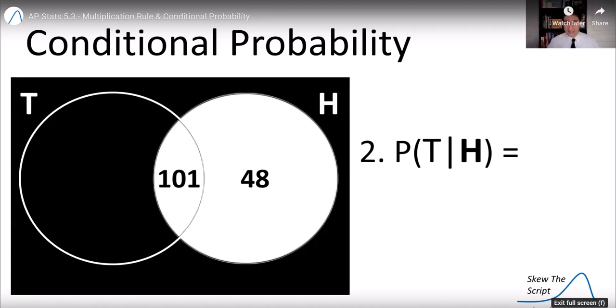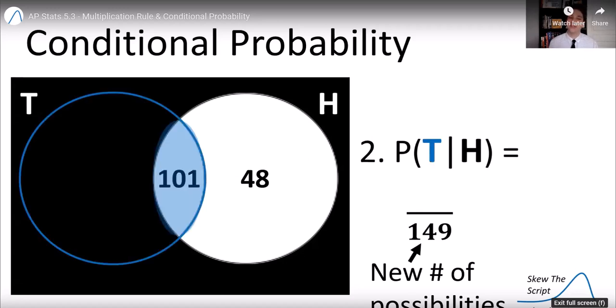So we're going to ignore everything in the diagram except for the circle that represents the high income earners, because no one else has a possibility anymore. And so our new denominator, our new number of total possibilities is just 149, just the people who are high income earners. So that's what the given does. It slices the data to make it just out of that total.